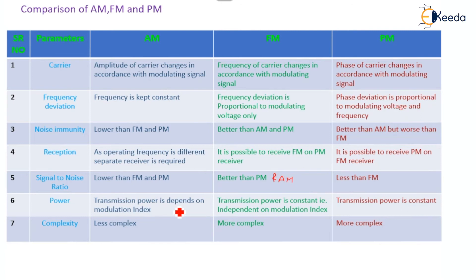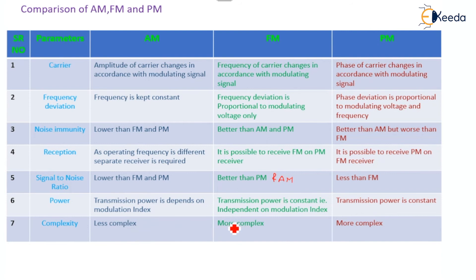Regarding power transmission: in AM, transmission power depends on the value of the modulation index. In FM, transmission power is constant, that is independent of the modulation index. In Phase Modulation, transmission power is also constant.